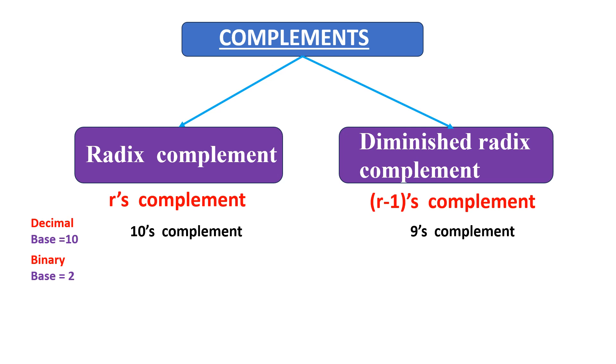In a binary number system, the base is 2. So the R's complement is 2's complement and R minus 1's complement is referred to as 1's complement.